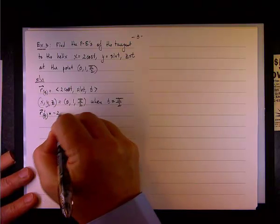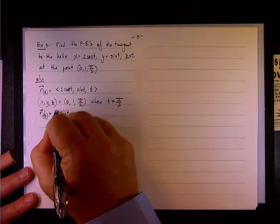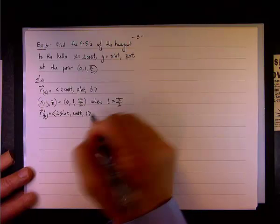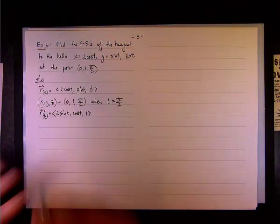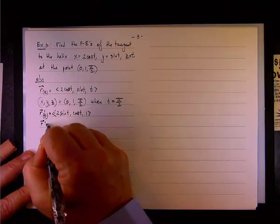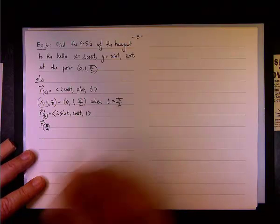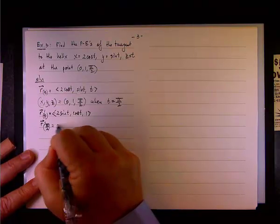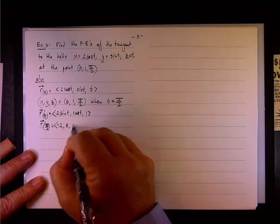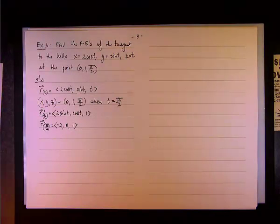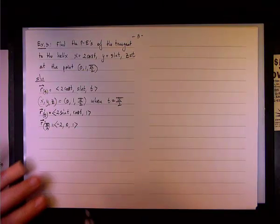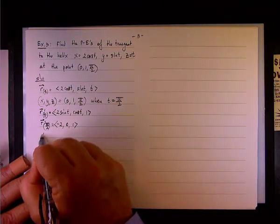So if we take the derivative vector, we'll have negative 2 sine t, and then we have cosine t, and then 1. And the derivative vector at t equals π over 2 would be simply negative 2, and then 0, and 1. So those are the direction numbers.